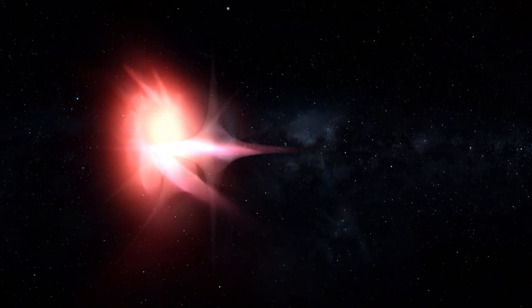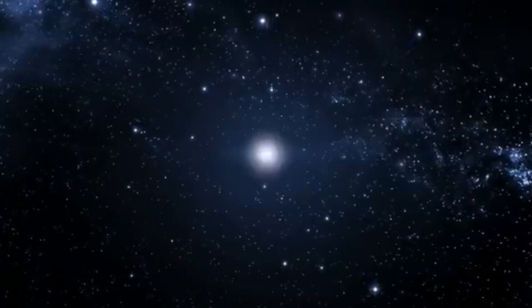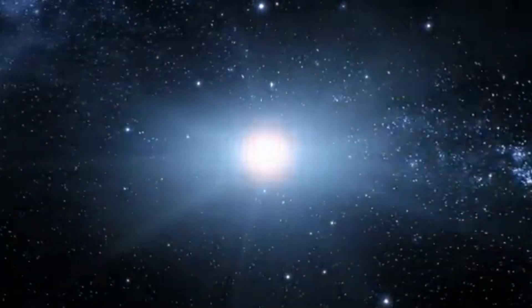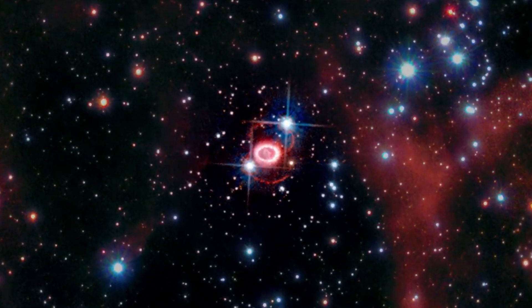This event occurs every 80 years or so. Keep in mind that a nova isn't the same as a supernova explosion. A nova refers to the sudden, brief explosion from a collapsed star known as a white dwarf, while a supernova is the explosive death of a massive star.